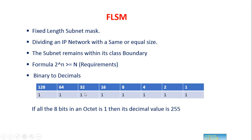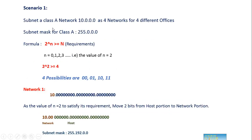Now let's look at a scenario. We are going to subnet a Class A network, 10.0.0.0, into 4 subnets that can be used for 4 different offices. In general, 10 is a Class A network, so the subnet mask is 255.0.0.0. For a Class A network, the first octet is the network portion and the last three octets are the host portion. Our requirement is 4 networks, so capital N equals 4.